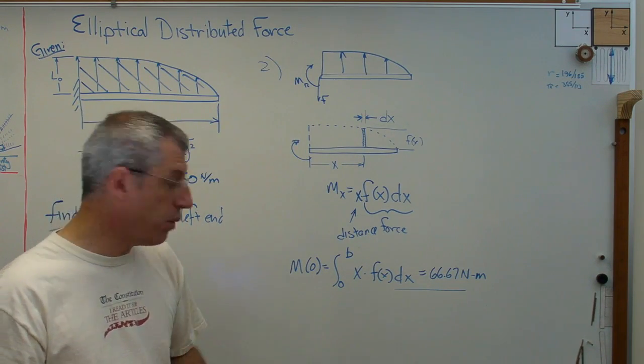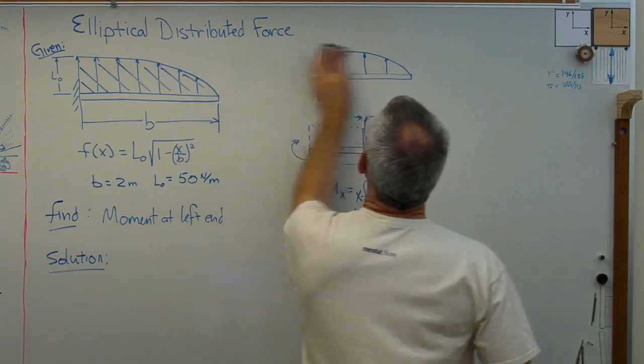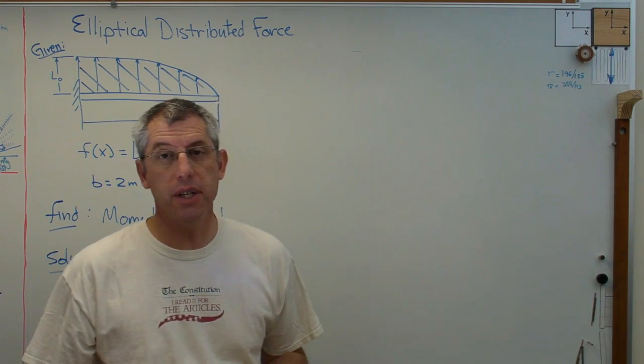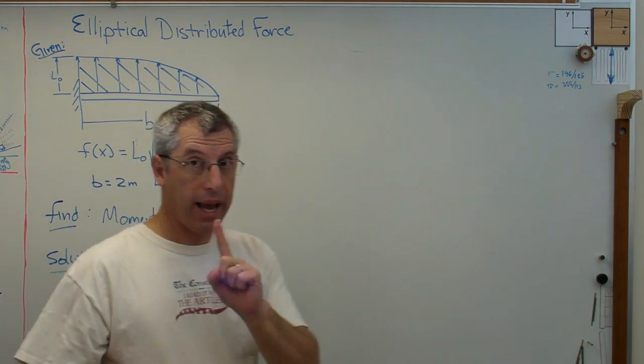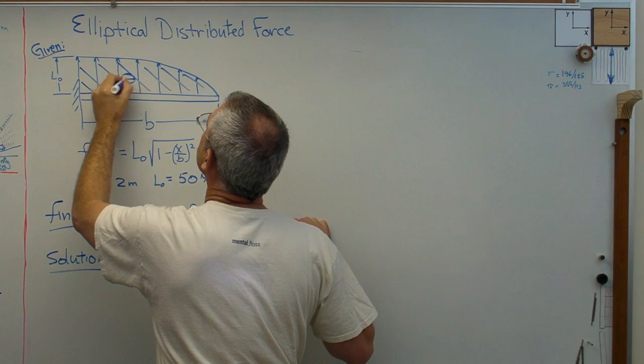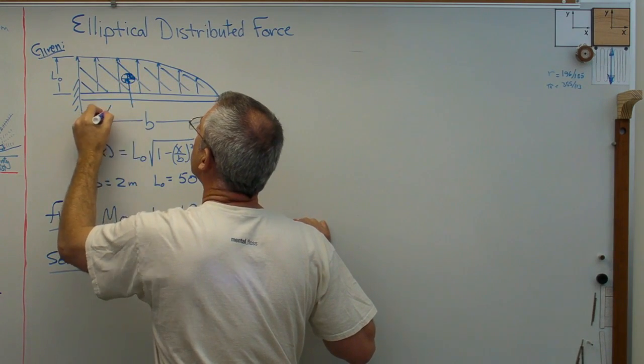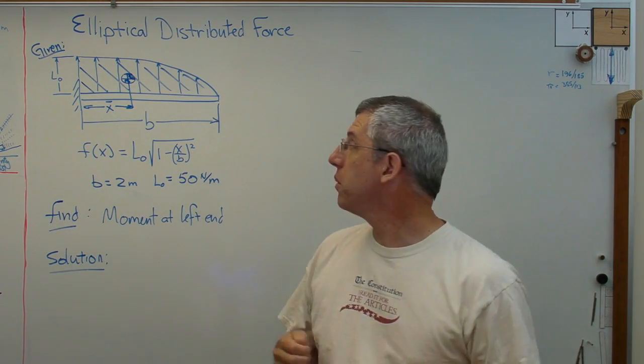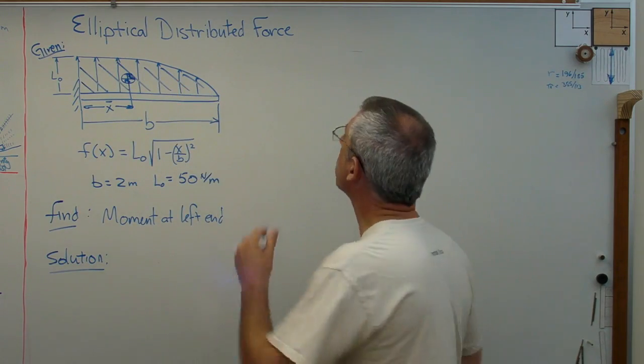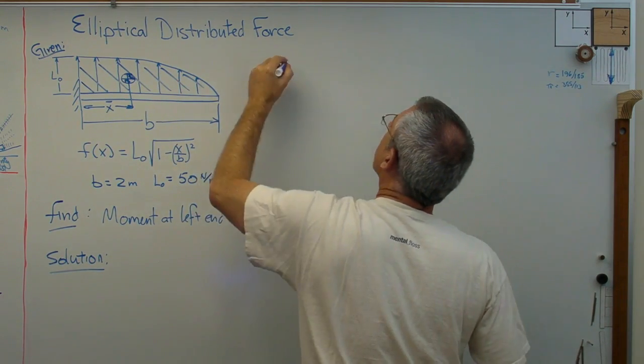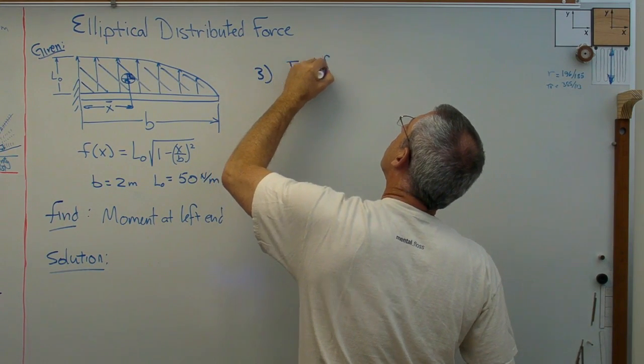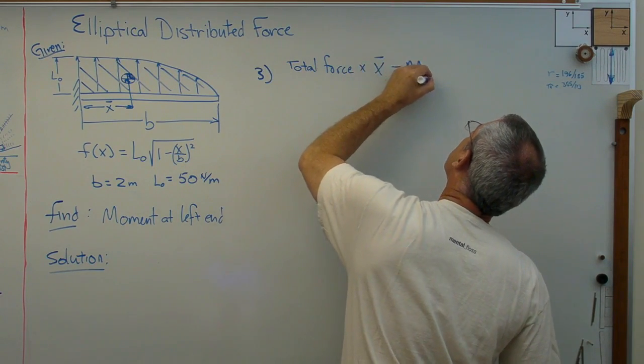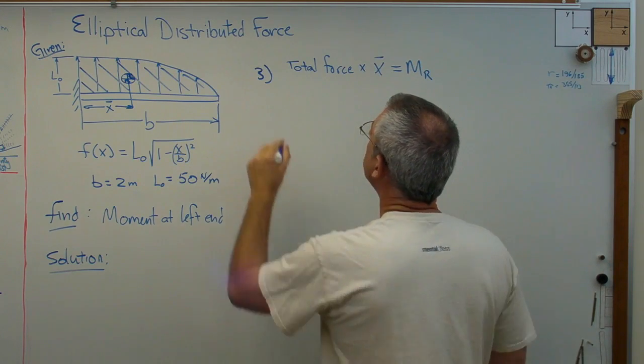Now, it turns out there's actually one more way that is, I'm not sure you do it this way, but you can. Moments are force times the distance, right? If I know the total force here and I know where the centroid is, I'll draw the centroid up here. I'll call that x bar. That's the x location of the centroid. If I knew what that was, I could multiply the total area times the centroid. So, I'll actually call this method three here. Total force times x bar is going to be my reaction moment. That's legit. Well, how do I find total force?